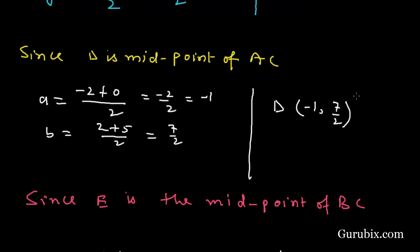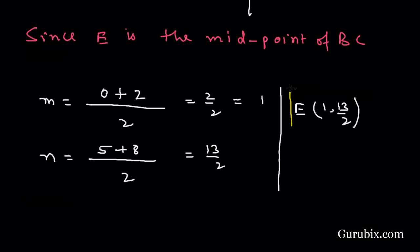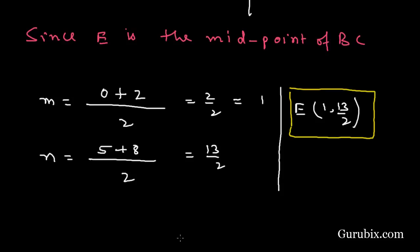So point C with coordinates (0, 5), point D with coordinates (-1, 7/2), and point E with coordinates (1, 13/2) are the points which divide the given line segment into 4 equal parts. This is the solution of the question. Thank you.